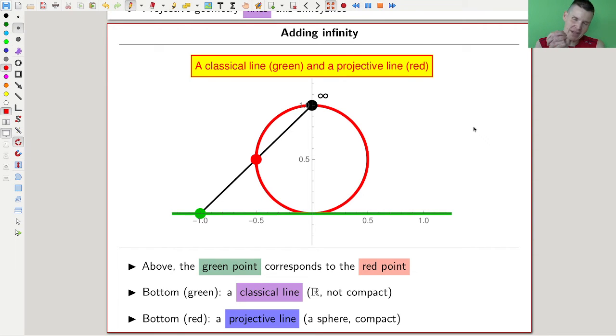And my picture is kind of this really beautiful picture of the projective line, circle, and the classical line is a line, and the relation between them is a stereographic projection. And one of them is compact. The classical line, the line,